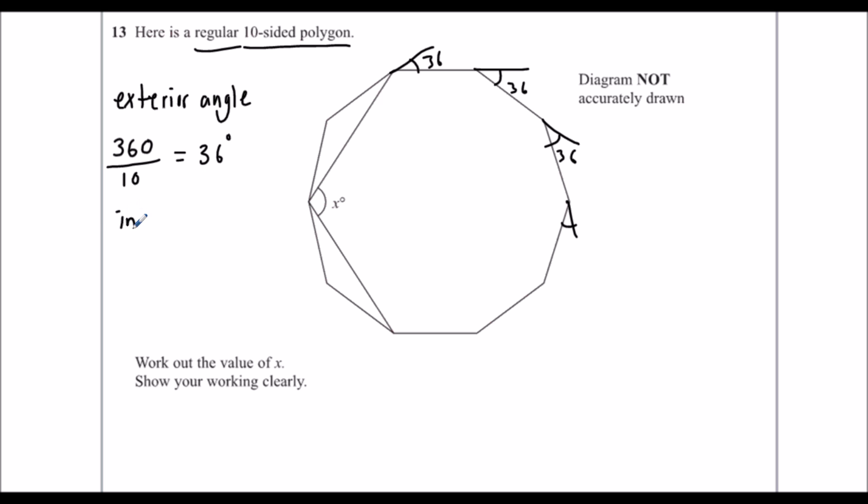Then from that, I can tell you the interior angle, because it's 180 minus 36. So that's 144 degrees. So all of these interior angles are 144 degrees.